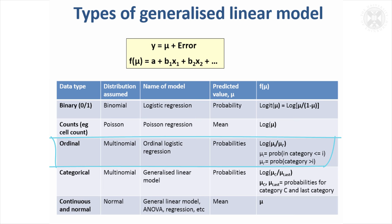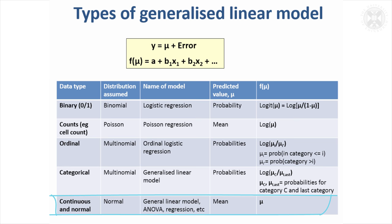For categorical data, even if it's unordered, you can analyze it using a generalized linear model. The convention is to look at the ratio of the probability of being in a particular category compared to the last category, and that can be modelled. Finally, general linear models for normal data broadly fit into this class, and the link function is just the identity—you don't apply a link function at all.